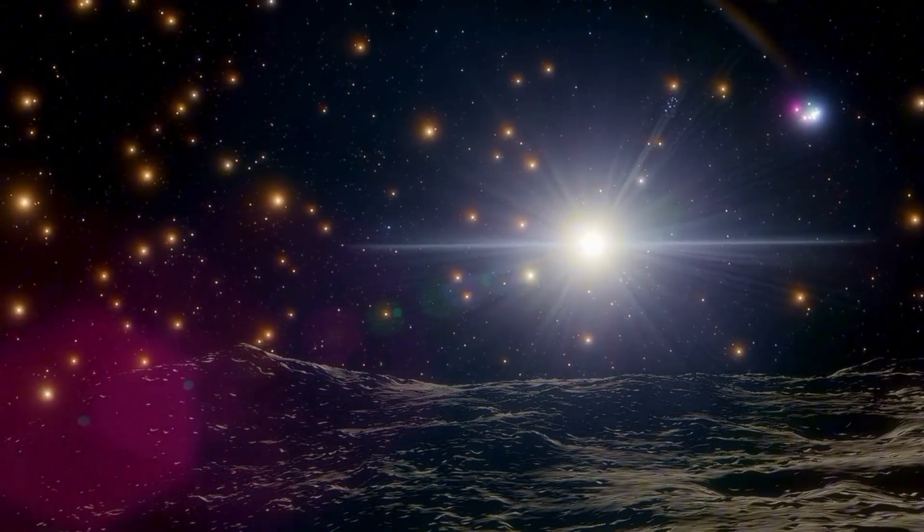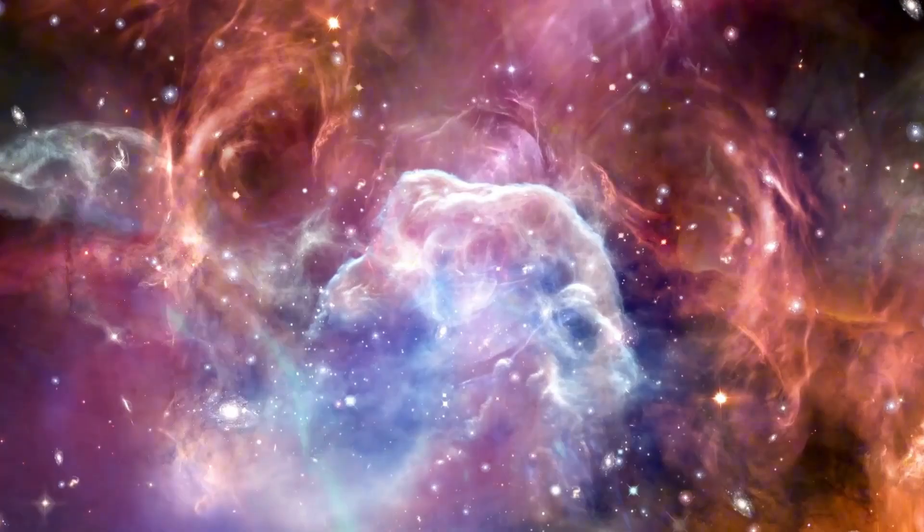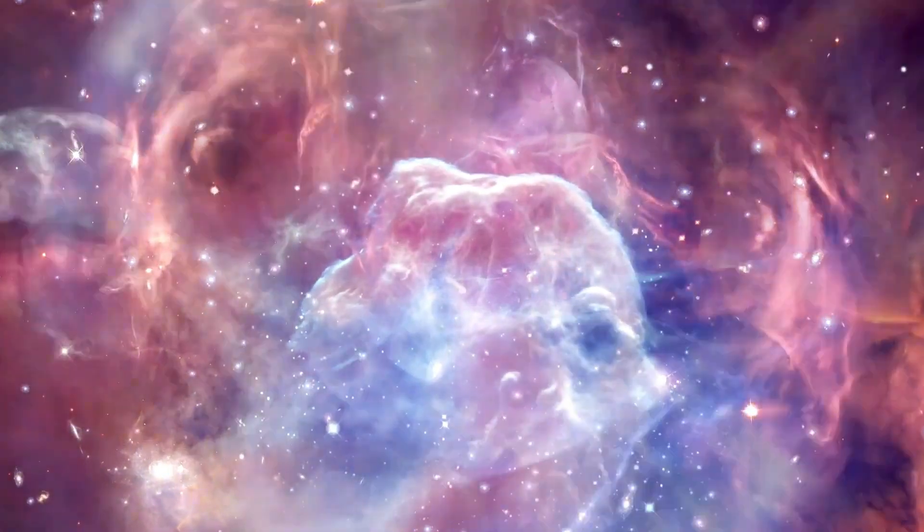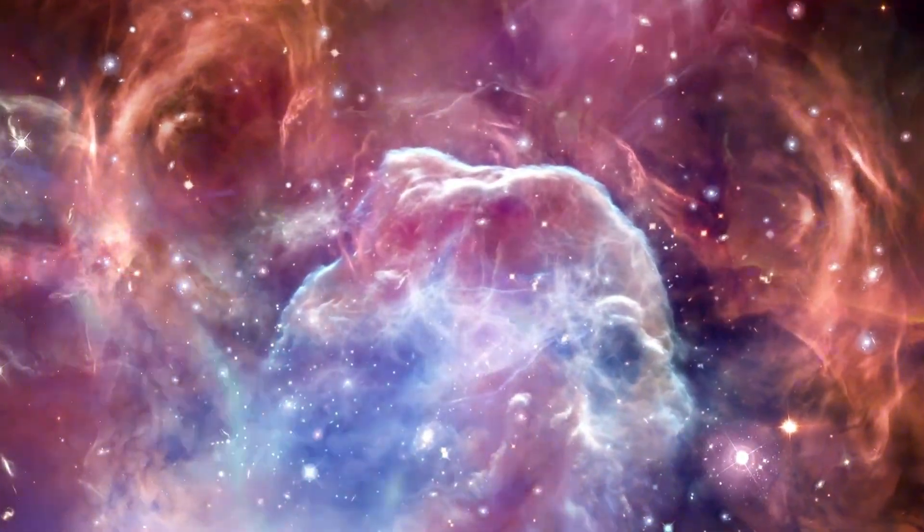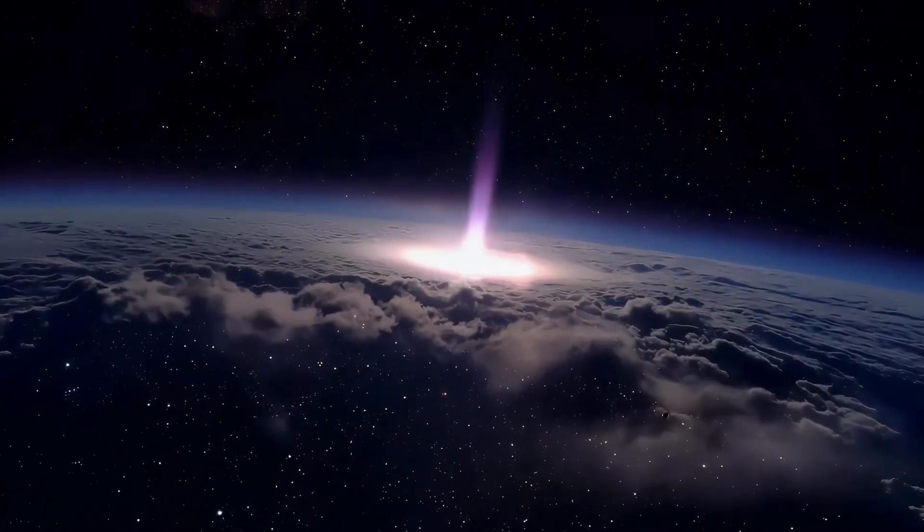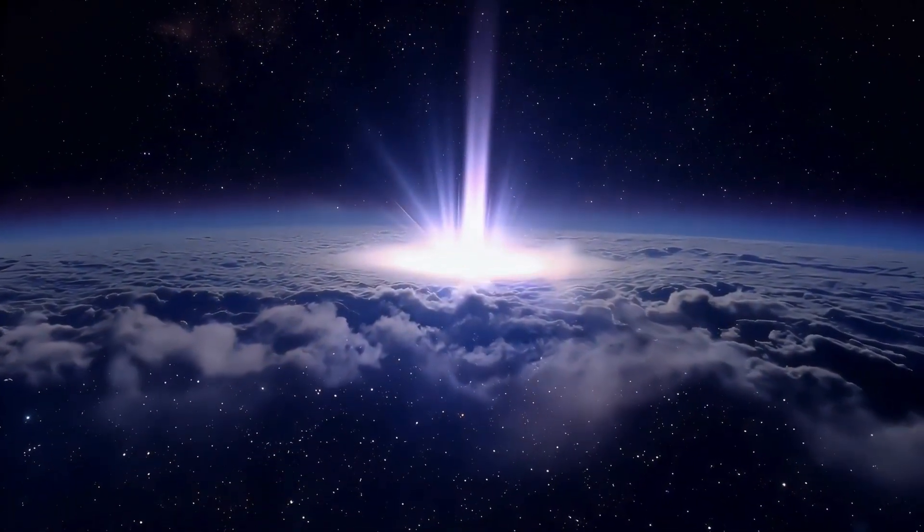Many of these exoplanets orbit around M-type stars. To understand M-type stars, it's essential to know that they are the smallest type of stars in the main sequence, often referred to as red dwarfs.